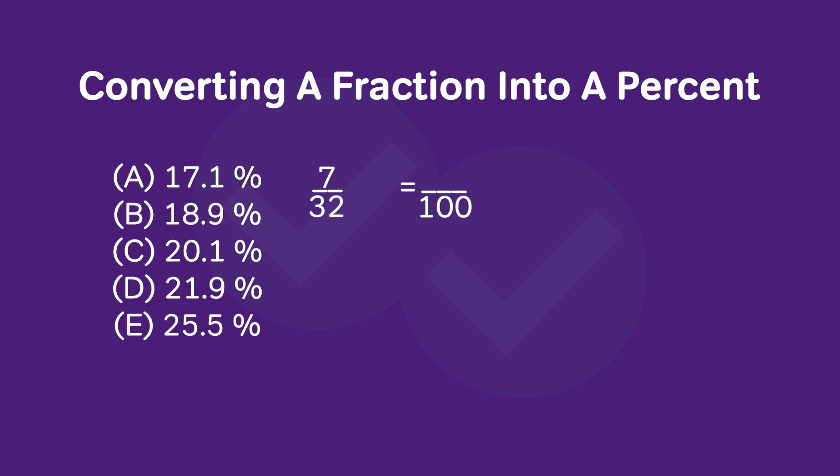To perform this conversion, we must multiply 32 by approximately 3. Now unfortunately, 32 times 3 does not equal 100. 32 times 3 equals 96. So really, we must multiply 32 by a number slightly larger than 3. We'll use this notation to represent that.